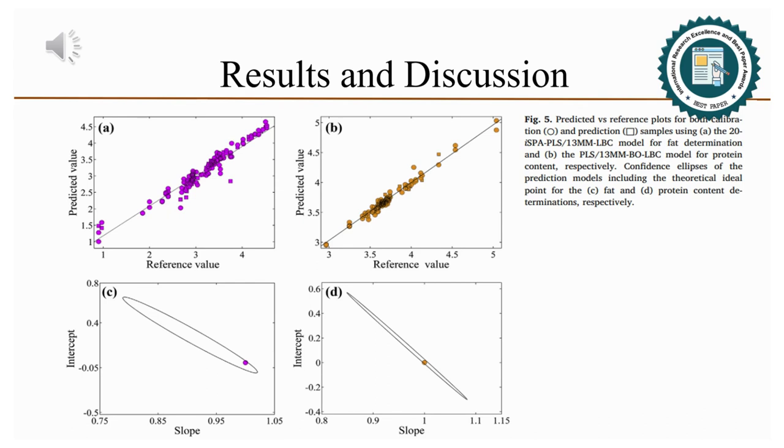For protein content, the best performance was achieved by using PLS for the NIR spectra preprocessed with 13-point moving mean, baseline offset, and linear baseline correction.